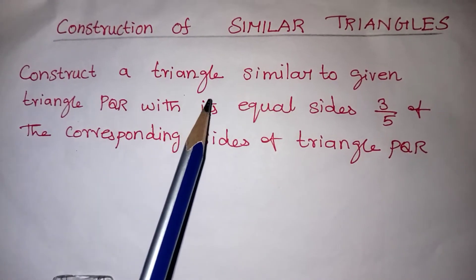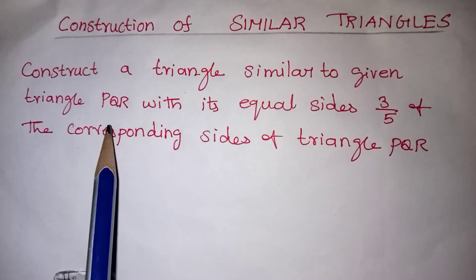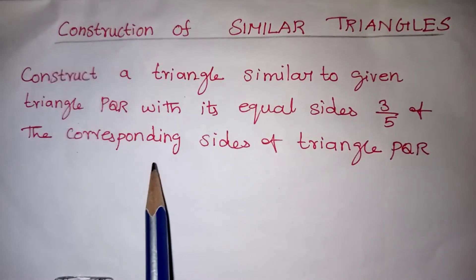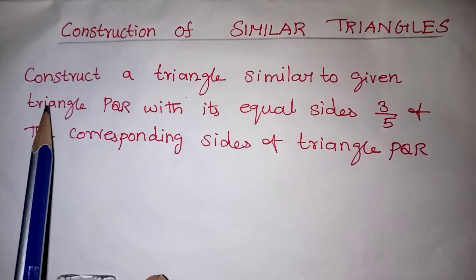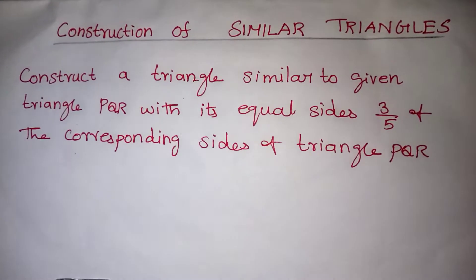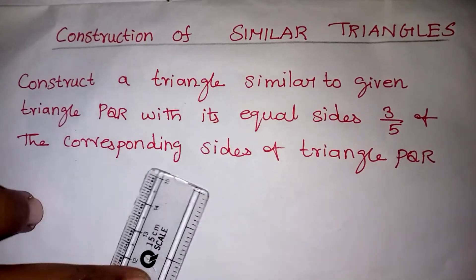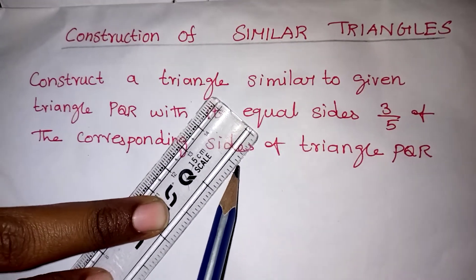Construct a triangle similar to the given triangle PQR with sides equal to 3/5 of the corresponding sides of triangle PQR. First, they are asking to draw any triangle. For the triangle, they did not mention any measure, so you can draw any triangle of your own measure.